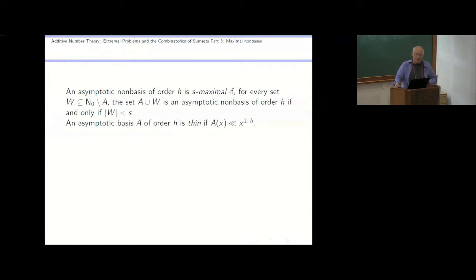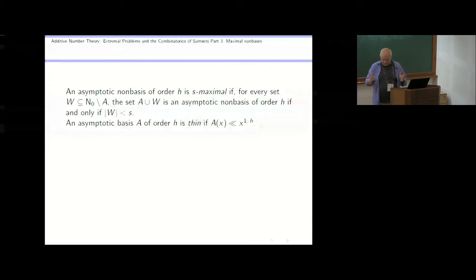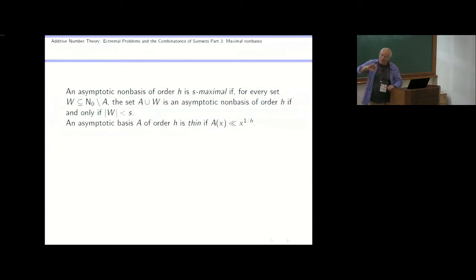Once you get into this business, you can ask: what is a maximal non-basis? You have a non-basis and if you add any element, it flips and becomes a basis. Suppose you want to do something slightly fancier: can you have a non-basis where you can add any single element and it still is a non-basis, but if you add two elements it becomes a basis? More generally, for any positive integer s, you can define an s-maximal non-basis. So you have a set of integers — it's not a basis. You add one number: not a basis. You add another: not a basis. You add s minus one numbers: not a basis. But when you put in the s-th number, it flips and becomes a basis.